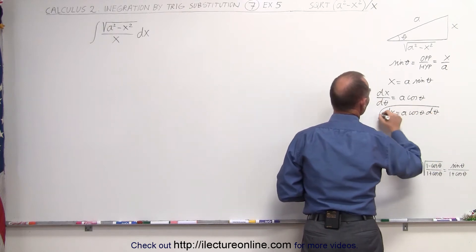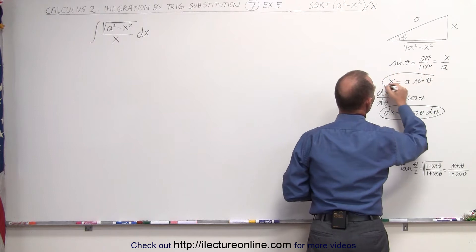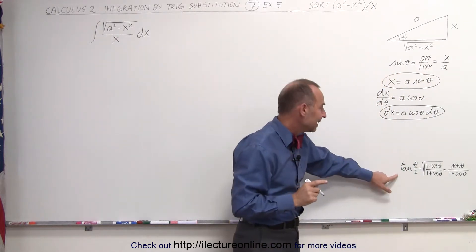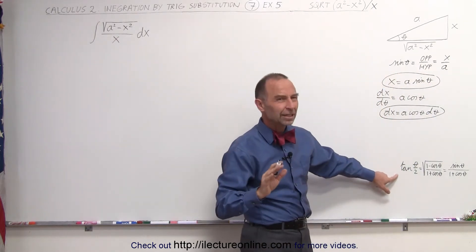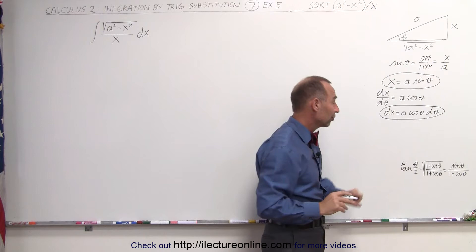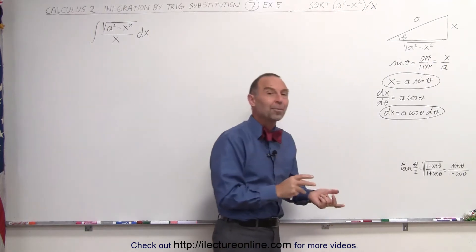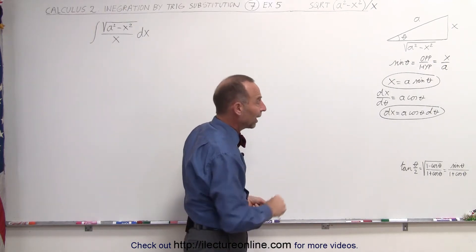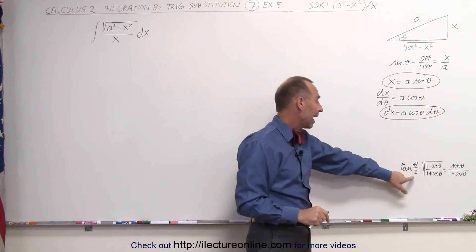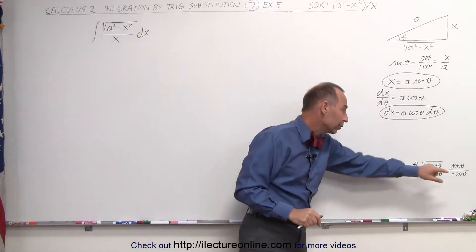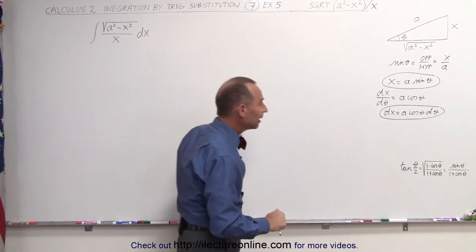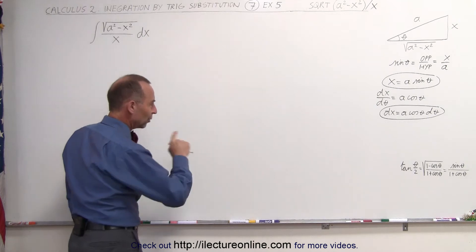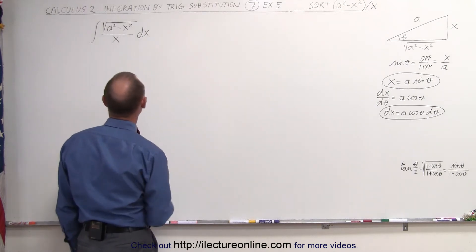So we use this substitution in our integral. Notice there is an identity we're going to need later. It's not a common identity — most of us do not remember it — but we can write tangent of half-theta equal to sine theta divided by one plus the cosine of theta. We'll see why we need that in just a moment.